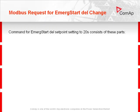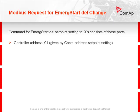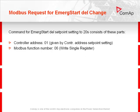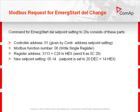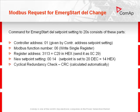The command for setting the emergency start delay setpoint to 20 seconds consists of these parts: control address, Modbus function number, register address, new setpoint setting, and cyclical redundancy check, which is done automatically by your Modbus terminal. The complete request is shown here.